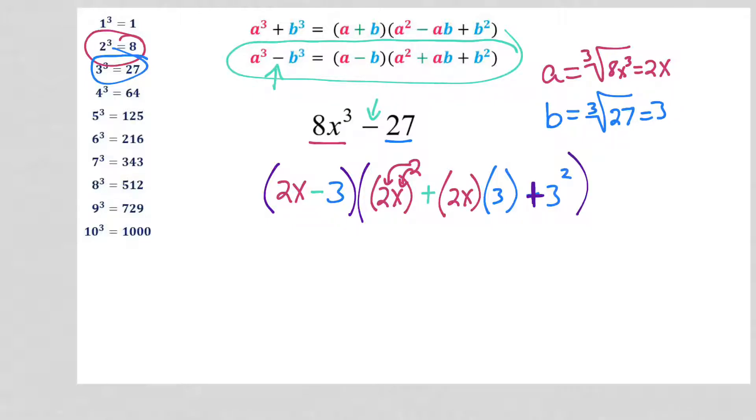So now when I rewrite this, 2x minus 3, I'm going to have 2 squared which is 4, and then x squared, plus 6x, plus 9. And that's my final answer.